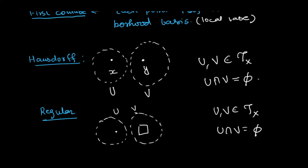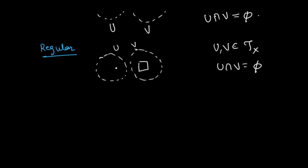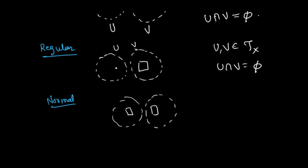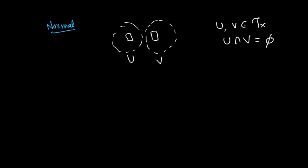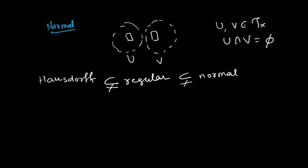If you can separate two points by disjoint open sets, it is Hausdorff. If you can separate a point and a closed set, it is regular. If you can separate two closed sets, it is normal. So every Hausdorff space is regular and every regular space is normal — Hausdorff is contained in regular, which is contained in normal.